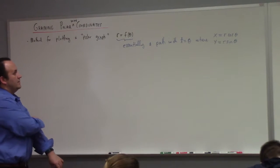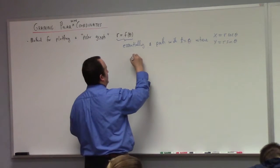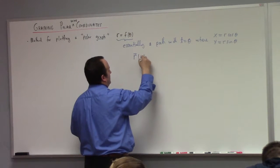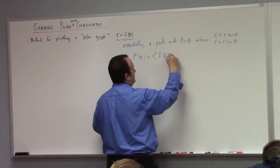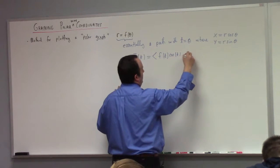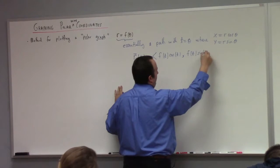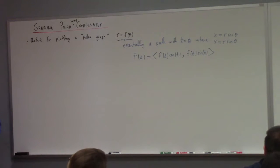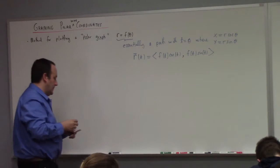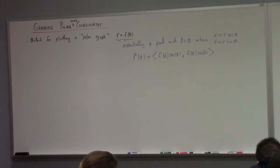But in this part of the course, we always use, we don't put t, we put theta. All right? So, I'll get back to the method for plotting, but since I've said this much, we might as well figure out how to calculate the slope of a polar graph, right? How would you calculate the slope of a polar graph?